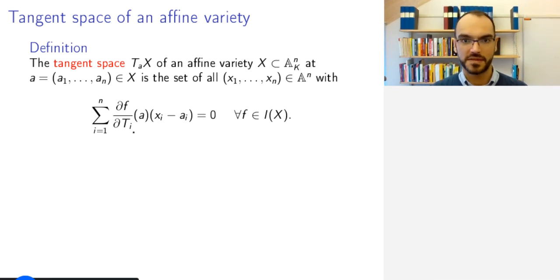And so, the tangent space at a given point A is the set of all points in the ambient space satisfying this system of linear equations. So, for each function f in the vanishing ideal of X, the sum whose terms are the partial derivatives ∂f/∂t_i at a times x_i minus a_i is equal to zero.